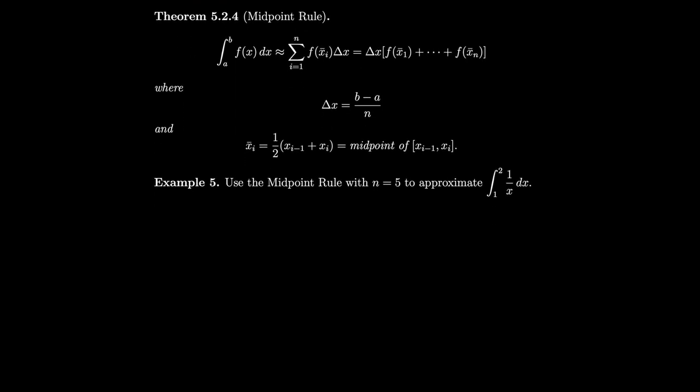For the midpoint rule, the integral is approximately equal to the Riemann sum of f of xi-bar times delta x, where xi-bar is the midpoint — half the sum of each pair of endpoints. In this case, we're letting xi star be a midpoint, and using the new bar notation to indicate the sample point is a midpoint. Bar is typically used as an average, so it's good notation for us.